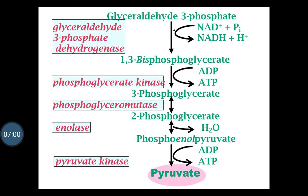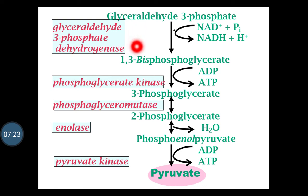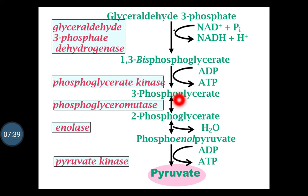In the second phase, glyceraldehyde 3-phosphate is converted into 1,3-bisphosphoglycerate. The enzyme which catalyzes this reaction is glyceraldehyde 3-phosphate dehydrogenase, and here the energy molecule is utilized. Then, 1,3-bisphosphoglycerate is converted to 3-phosphoglycerate by the enzyme phosphoglycerate kinase, and here the energy molecule is created.